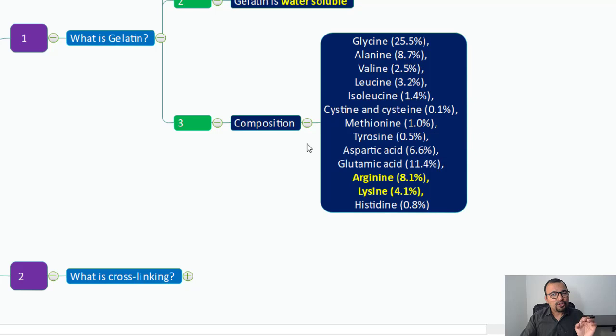When it comes to the composition of gelatin, there are many proteins present inside it. I highlighted two important proteins, arginine and lysine, because these two proteins are the reason for the formation of cross-linking.